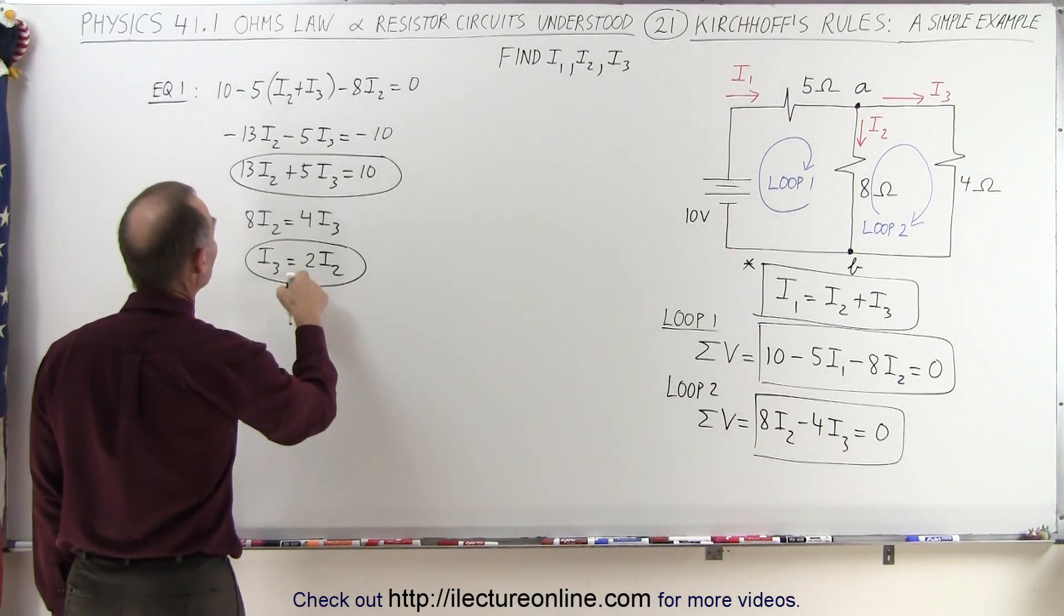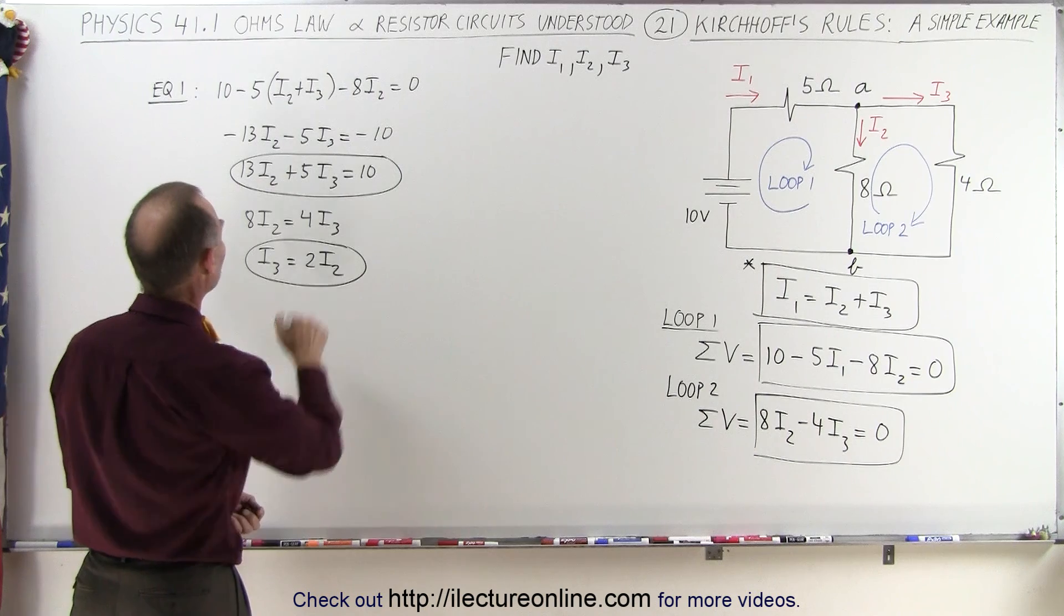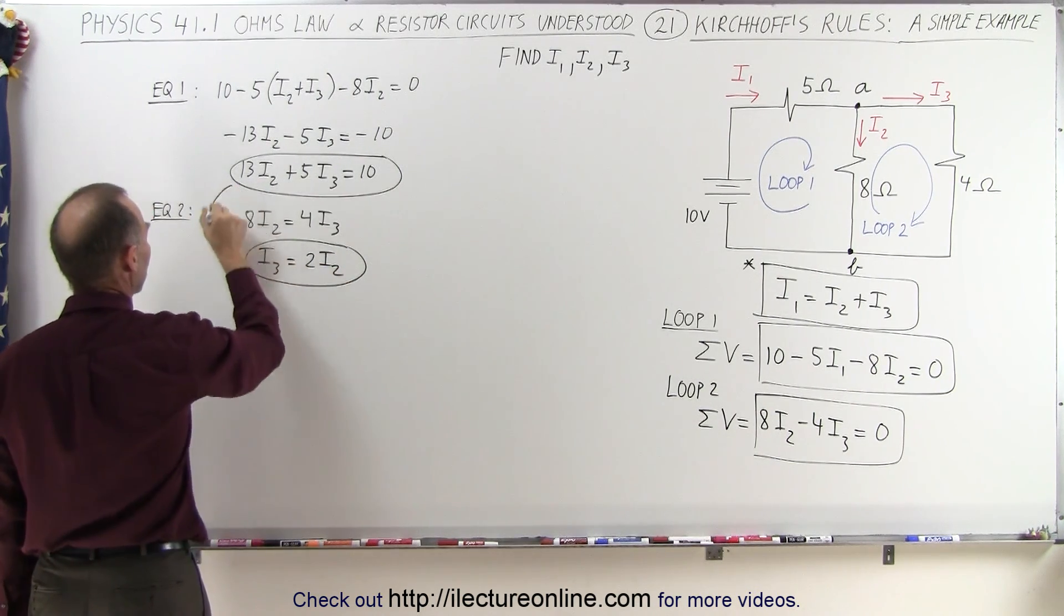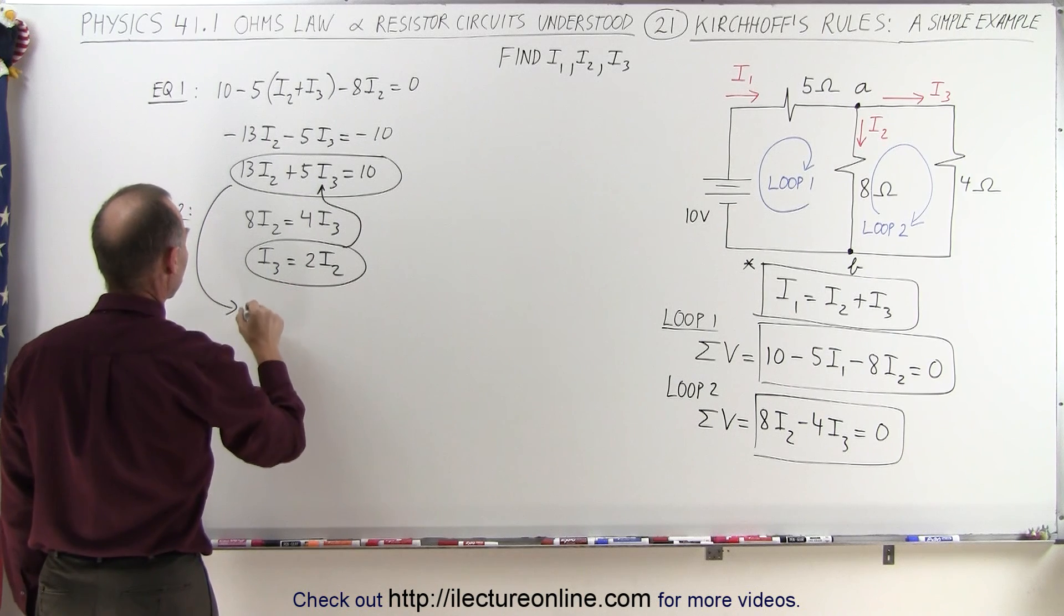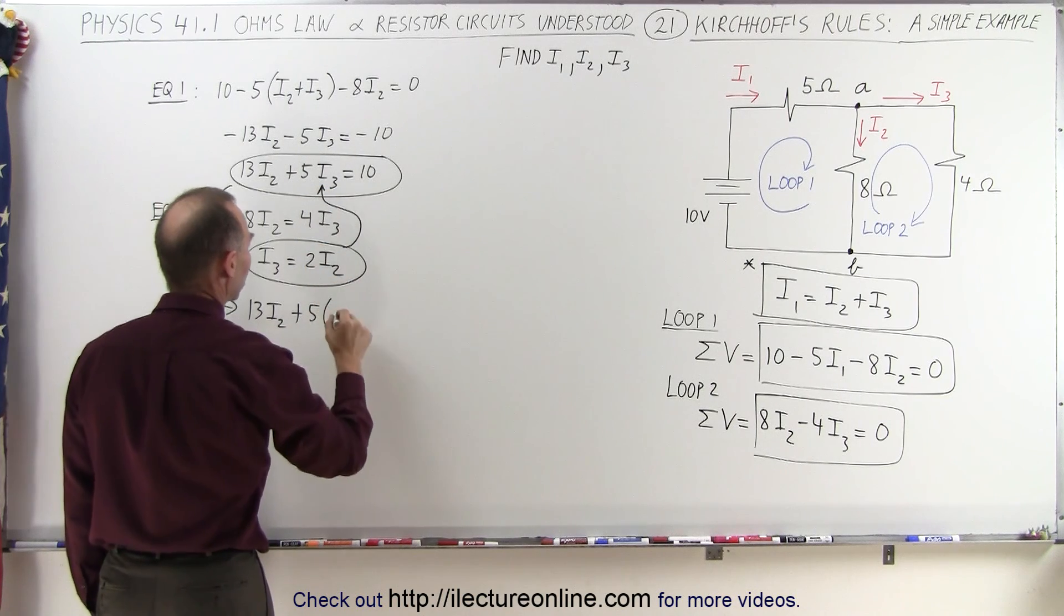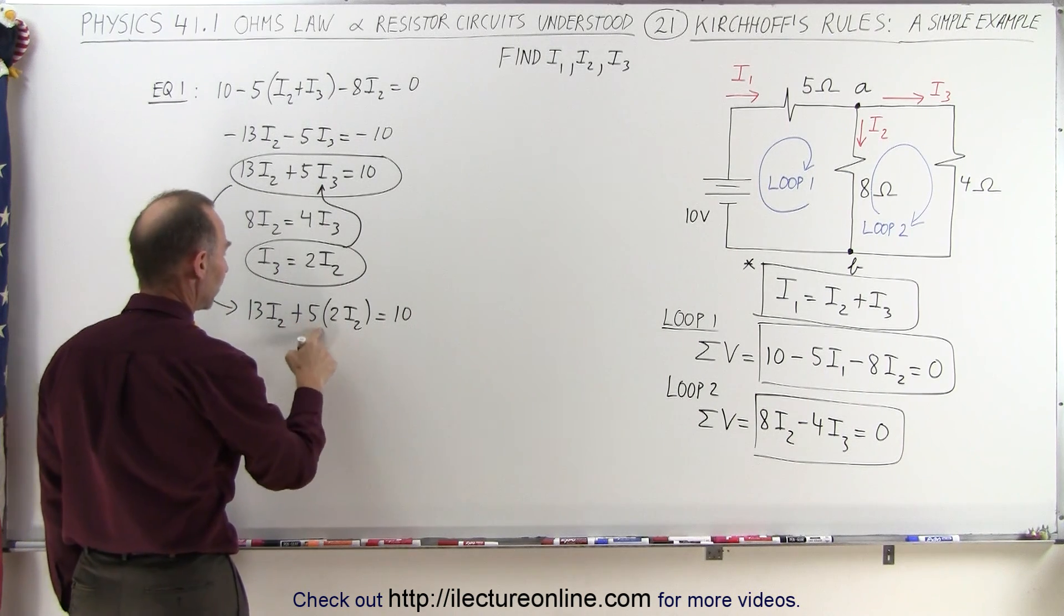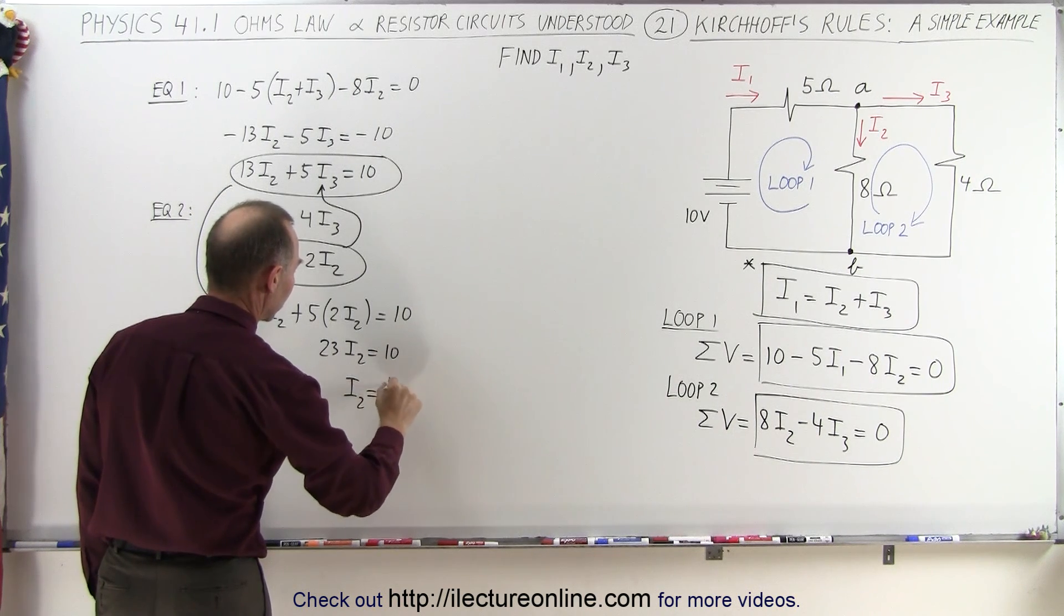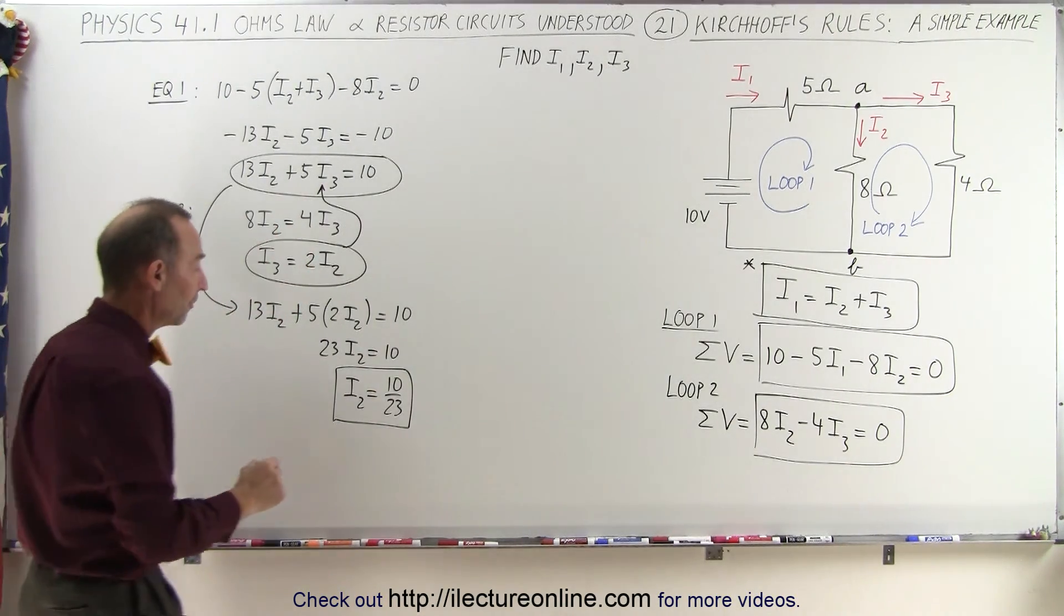Now all I have to do is plug this back into my equation over here. So I can replace I3 by I2 right here. By using this equation here and substituting I3 for 2I2, I get 13I2 plus 5, instead of I3, I'm going to write 2I2, and that is equal to 10. So here we have 13 plus 10, or 23I2 is equal to 10, or I2 is equal to 10 divided by 23.